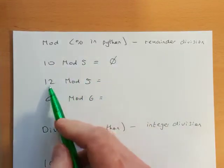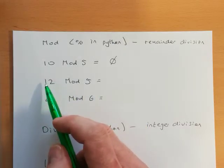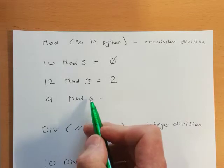12 mod 5 - well, 5 goes into 12 twice but we're left with 2. 9 mod 6...